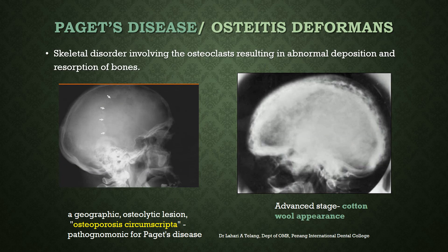Paget's disease, also called osteitis deformans, is a skeletal disorder involving osteoclasts resulting in abnormal deposition and resorption of bone. Early osteolytic lesions are seen on the skull, called osteoporosis circumscripta. At advanced stages, the term cotton wool appearance is used, where the involved skull or jaw appears whitish due to radio-opacity from excessive abnormal bone deposition and resorption.